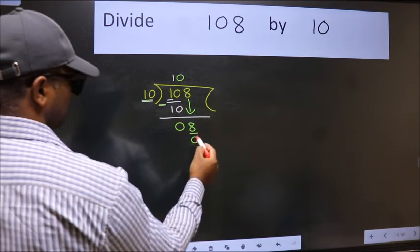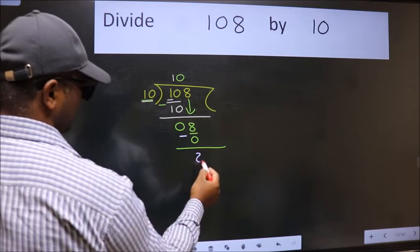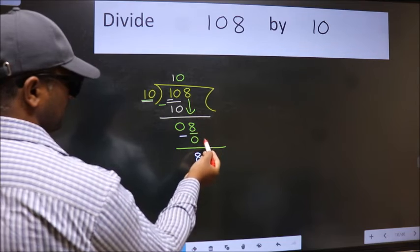So 10 into 0 is 0. Now we subtract, we get 8. Over here, we did not bring any number down.